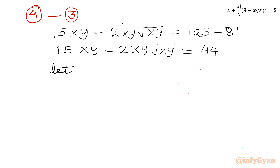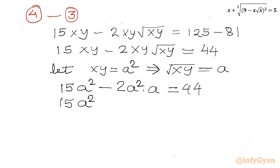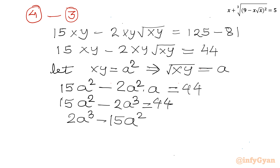Let us substitute xy equal to a squared. Then root xy equals a. Our equation becomes 15a squared minus 2a squared times a equals 44, which simplifies to 15a squared minus 2a cubed equals 44. Taking all terms to the right-hand side: 2a cubed minus 15a squared plus 44 equals 0.